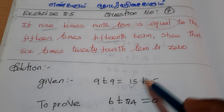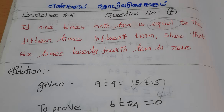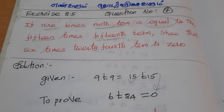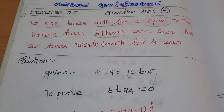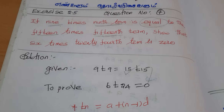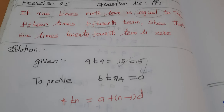Now, we have to prove this. There is a formula for the nth term. I will use: tn is equal to a plus n minus 1 into d.